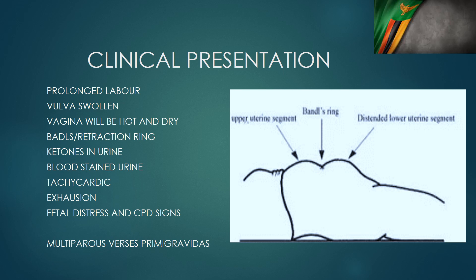When you look at the fetus, there is always fetal distress when making the diagnosis of obstructed labour, and many times fetal death. If the presentation is cephalic, there will be caput, there will be moulding, there will be a high station — all things showing that this labour is mechanically not possible.